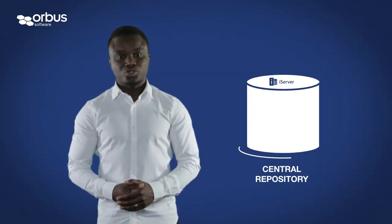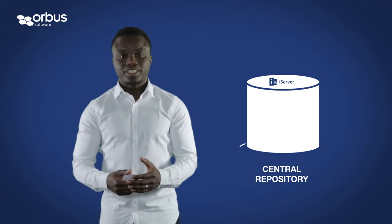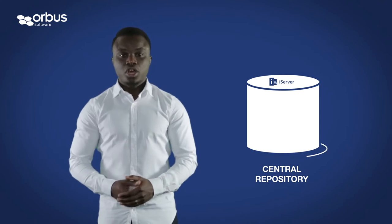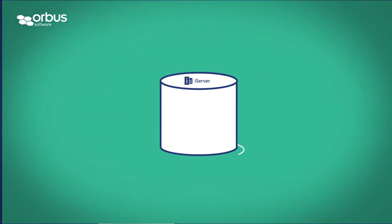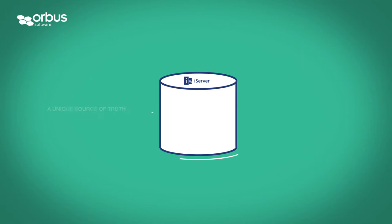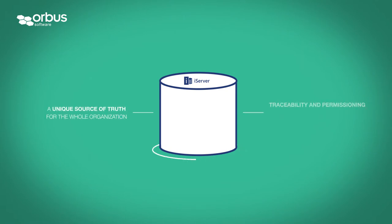Secondly, iServer offers a central repository for storing and managing deliverables to support the BPA function. The repository acts as a unique source of truth for the whole organization, and its traceability and permissioning features ensure appropriate governance of enterprise content.